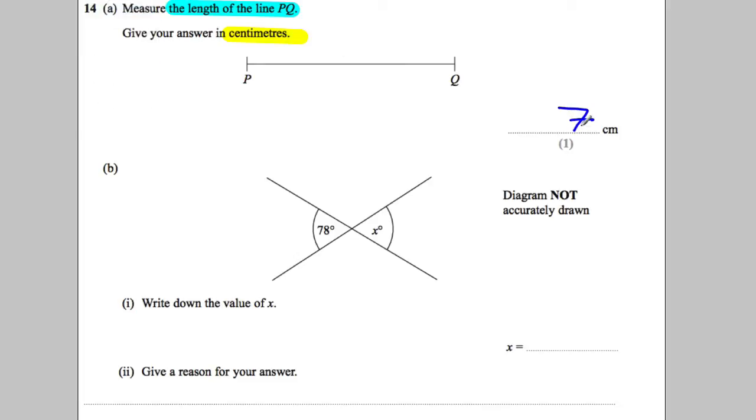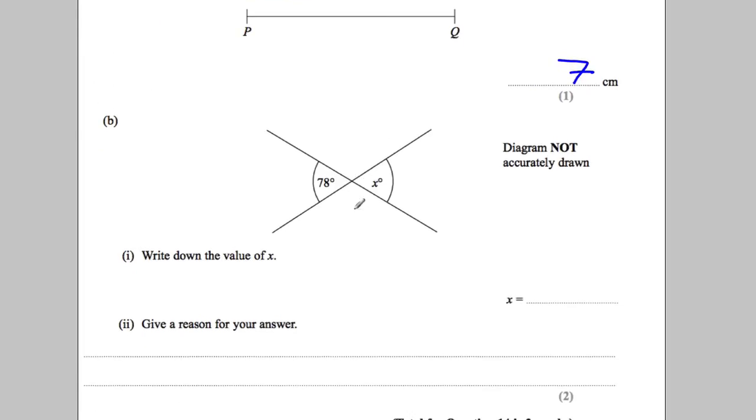Part B. Now here we go, a really important point here: diagram not accurately drawn. That means you must not get out your protractor and try and measure it. It is not acceptable to do that. You have to, when you see that sign, use your angle facts to answer the question.